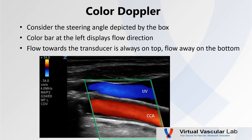Let's consider this color Doppler image of a common carotid artery. The first thing we need to do to interpret it is consider the steering angle depicted by the box. We know that our look angle, or angle of insonation, is coming in along the arrow. We see the color is red. We look at our color bar on the left — it always displays flow direction. Flow towards the transducer is always on top, flow away is on the bottom. Therefore, we know flow in that common carotid artery is moving from right to left.